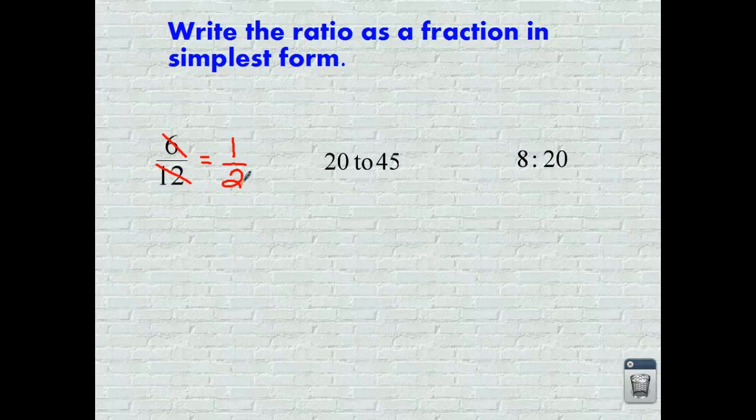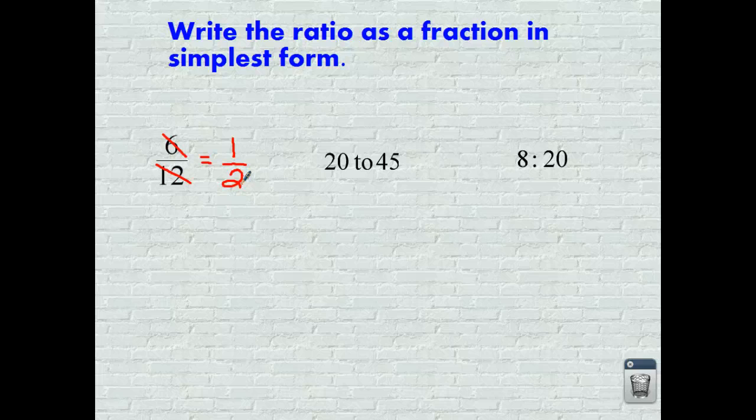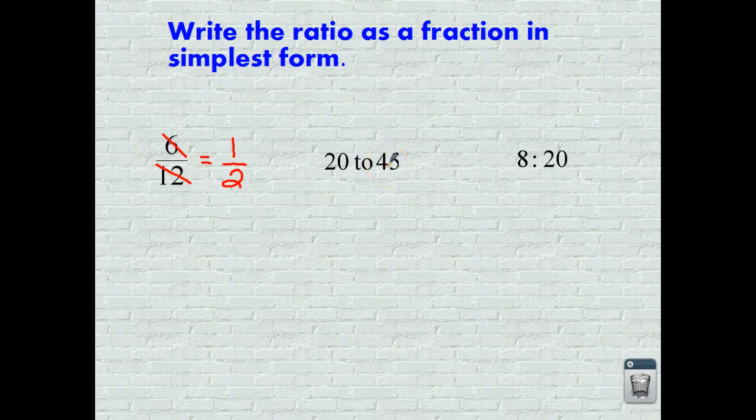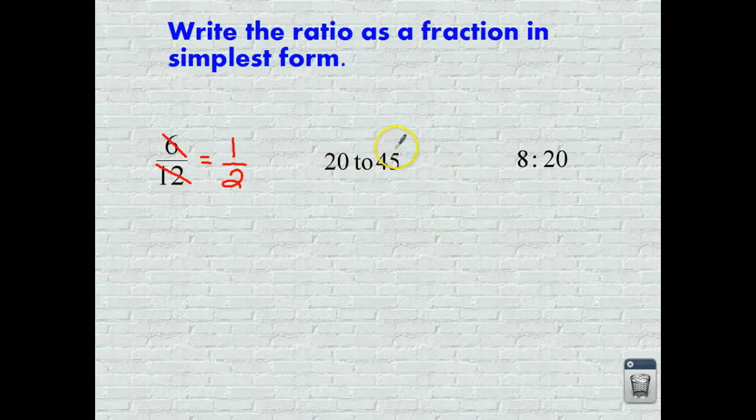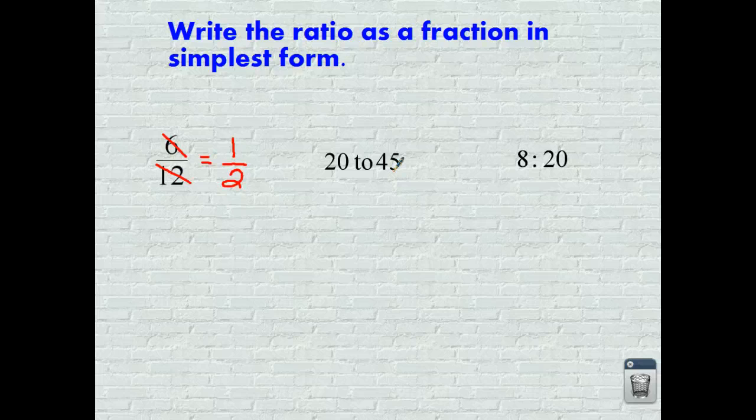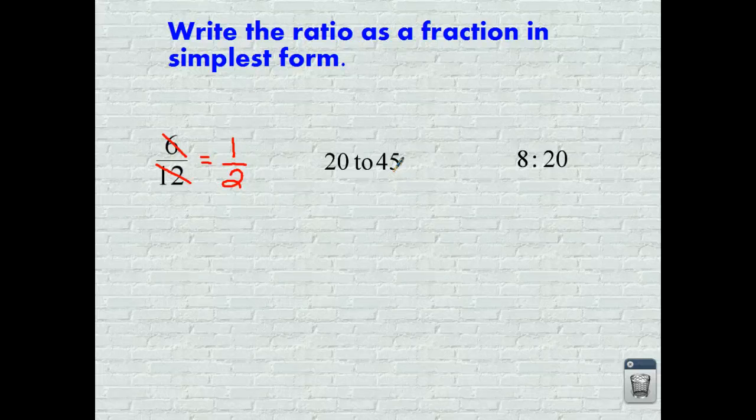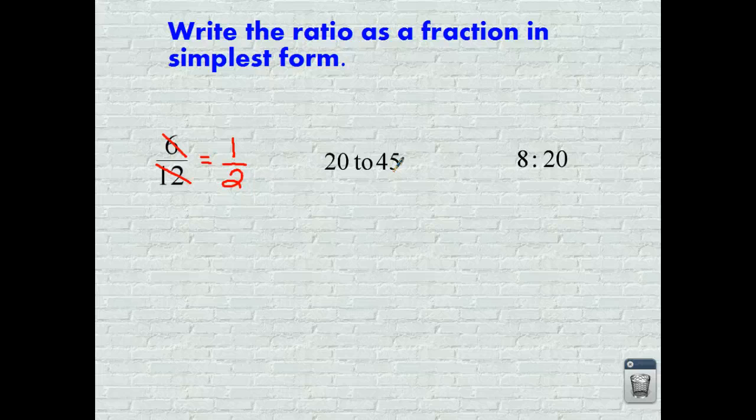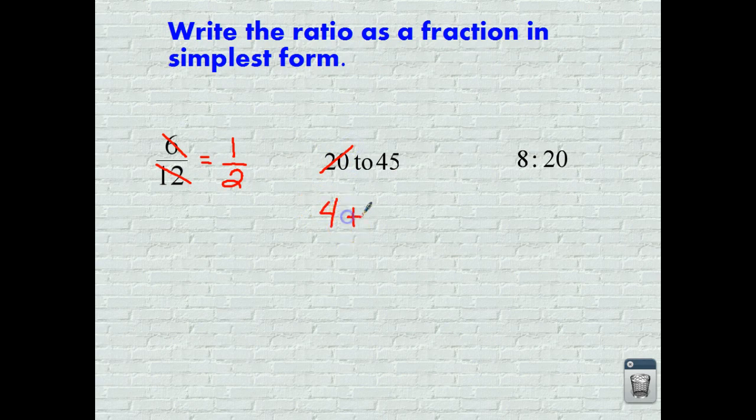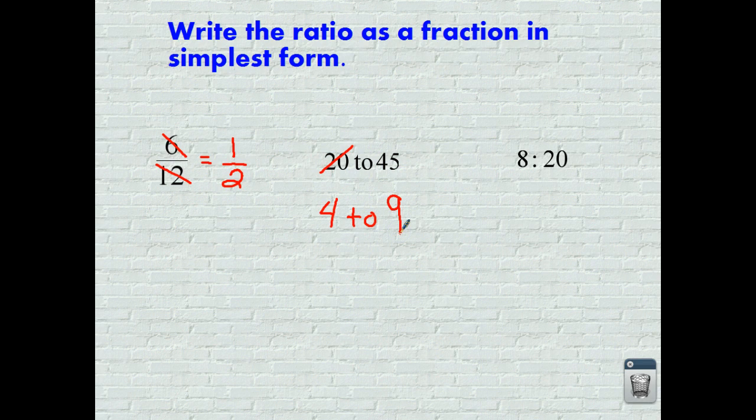The next one over is using words, so 20 to 45. I have what number goes into both of these other than 1. Well, 2 doesn't work because it works for 20 but this is an odd number so 2 won't go into 45. Think of your multiples of 5, your multiples of 3, your multiples of 4. Oh wait, how about multiples of 5? I think 5 is actually the largest number that goes into both of them. So let's do it. 5 goes into 20 four times, and 5 goes into 45 nine times. And there you have it, 4 to 9, and that is simplified.